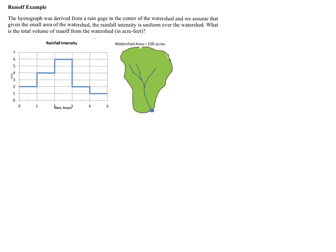We have a hiatograph shown here on the left, which again gives the intensity of the rainfall over time. This is a five-hour storm derived from a rain gauge in the center of the shown watershed, and we want to know the total volume of runoff from the watershed of this rainstorm. So I'm going to start here by trying, by finding the total rain that fell in this five-hour storm.